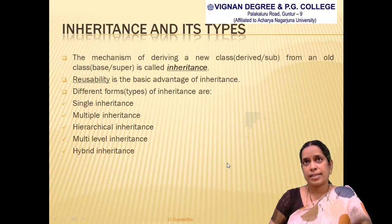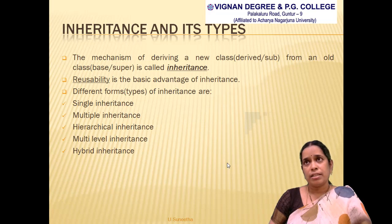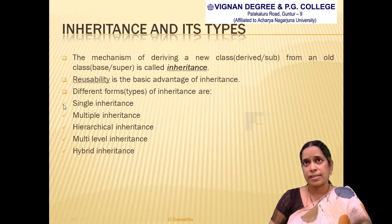First, we will discuss inheritance and its types. The definition of inheritance: inheritance is the mechanism of deriving a new class from an already existing class. The old class is called the base class, parent class, or super class, and the new class is called the derived class, subclass, or child class. The main advantage of inheritance is reusability.